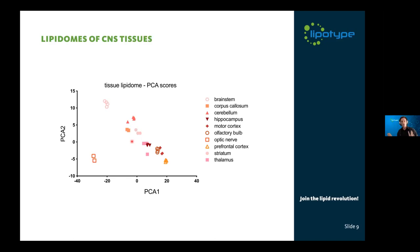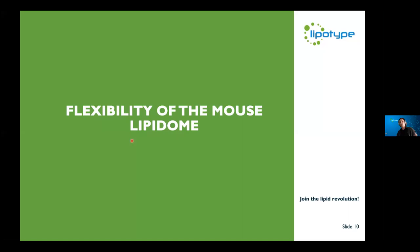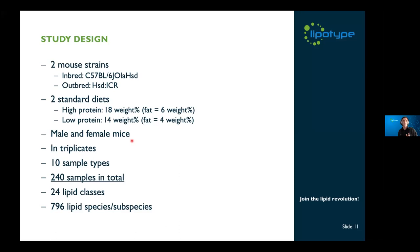We then went on and took a broader look at the overall mouse lipidome by looking at different tissues and how they vary depending on certain conditions. We did a study looking at two different mouse strains — one inbred, one outbred. We fed them on two standard diets: high protein and low protein. We looked at male and female mice, and we sacrificed mice in triplicates and collected 10 different sample types — 240 samples in total. We covered 24 lipid classes, and after quality filters, 796 different lipid species survived and were included in the analysis.